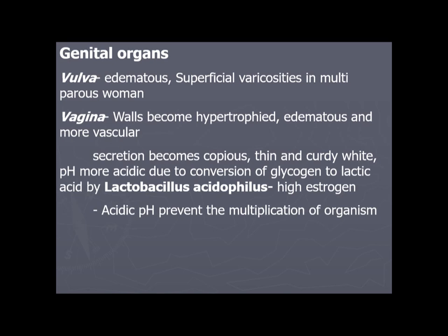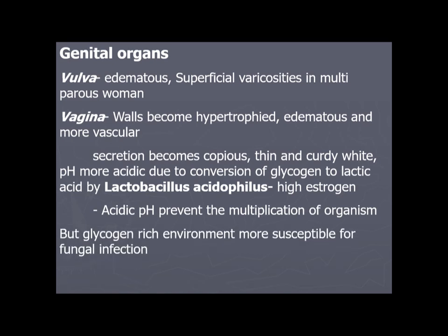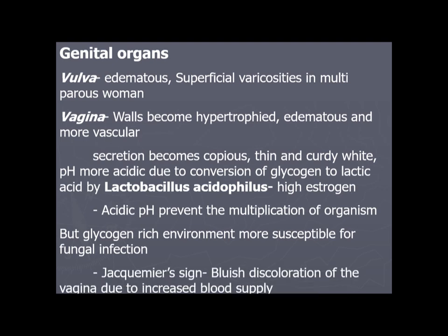During pregnancy, Lactobacillus acidophilus converts glycogen to lactic acid, creating an acidic pH that prevents multiplication of microorganisms — a physiological method of infection prevention. However, a disadvantage is that the glycogen-rich environment is more suitable for fungal infection.